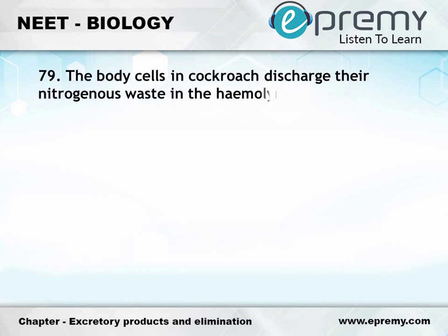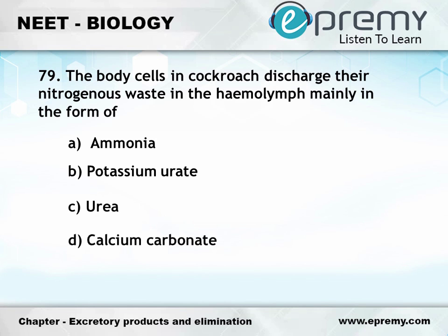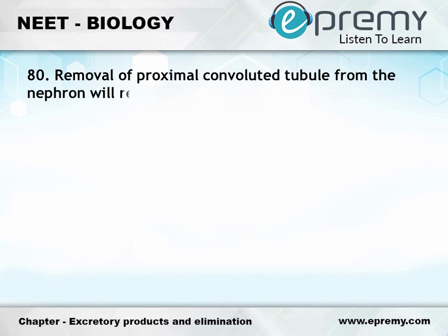Question number 79: The body cells in cockroach discharge nitrogenous waste into the haemolymph mainly in the form of — Option A: Ammonia, Option B: Potassium urate, Option C: Urea, Option D: Calcium carbonate. The answer is Option B: Potassium urate.